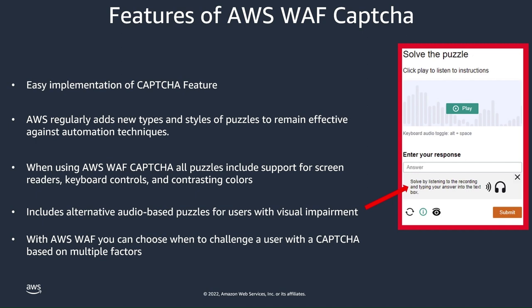These CAPTCHA challenges should be fairly easy and quick for humans to complete, yet hard for computers to either complete successfully or complete with any meaningful rate of success. This is why customers commonly use the AWS WAF CAPTCHA feature when a block action would stop too many legitimate requests — otherwise known as a false positive — but letting all traffic through would result in an unacceptably high level of unwanted requests, such as those from bots.